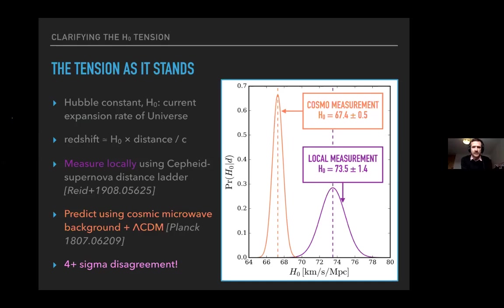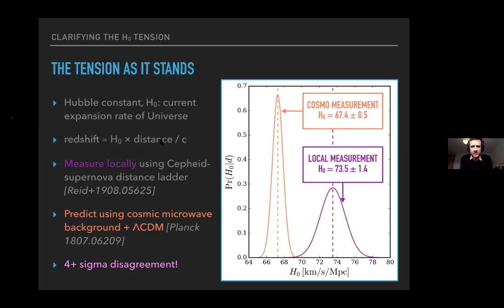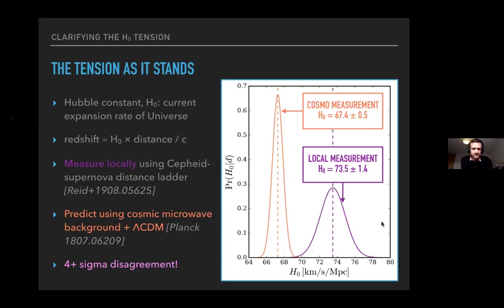How do we measure it? As Hubble himself told us, we need to find some objects, figure out their redshifts — basically the velocities at which they're moving away from us — and their distances. The ratio of those two quantities gives us H₀, the expansion rate of the universe. The best way we have right now is the Cepheid supernova distance ladder, put together by the SH0ES collaboration led by Adam Riess. This gives a measurement of ~73.5 km/s/Mpc with around 2% precision.